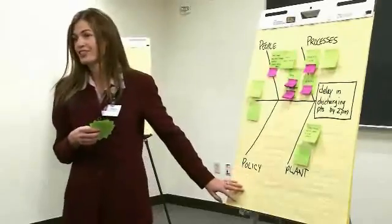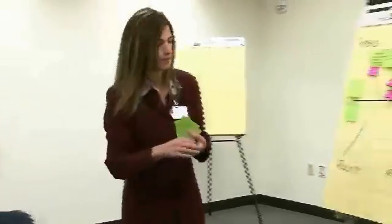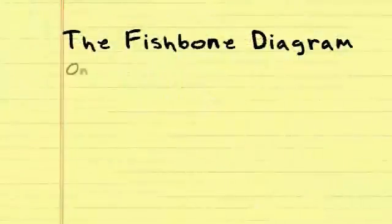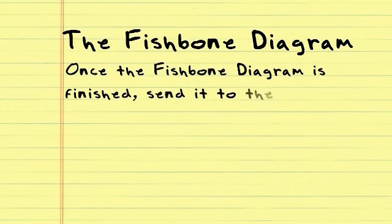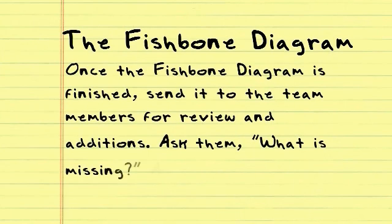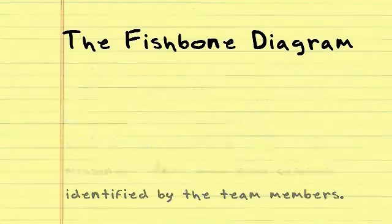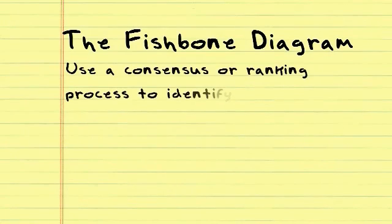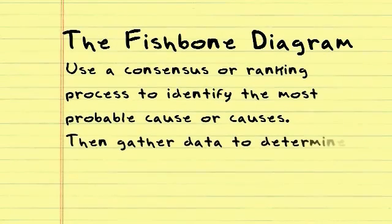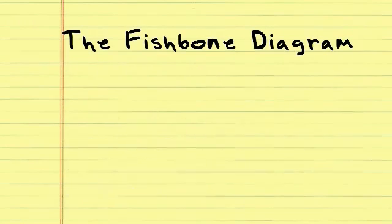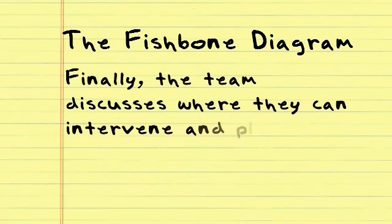Does anybody know exactly what our policy does say? Not really. That's a great question — and that's when we need to research. Write that on a blue sticky so that we can remember to research that question. After all ideas are on the fishbone diagram, interpret or test for root causes by one or more of the following: look for causes that appear repeatedly within or across major cause categories. Once the fishbone diagram is finished, send it to the team members for review and additions — ask them, what is missing? Use a consensus or ranking process to identify the most probable cause or causes. Then gather data to determine relative frequencies of the different causes. Finally, the team discusses where they can intervene and plans a rapid test of change.